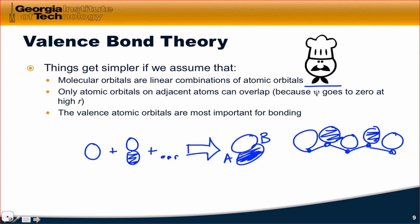So one of the key assumptions of valence bond theory is that only atomic orbitals on adjacent atoms can overlap. When we make linear combinations of the atomic orbitals, we can only do it if the orbitals are on adjacent atoms. There's good reason for this, because typically the wave function goes to zero at high R values — far from the nucleus. So wave functions are largest in magnitude close to the nuclei, and only adjacent atoms will have simultaneously large values of psi for their atomic orbitals.